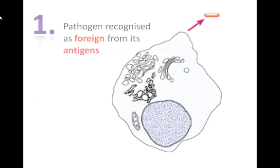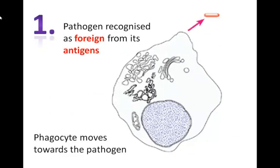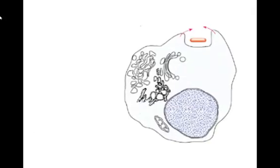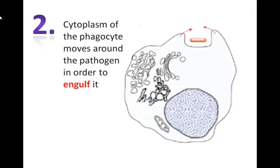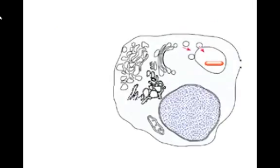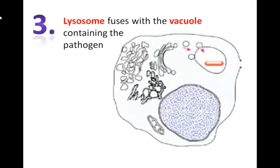But how do phagocytes actually work? Well, when a pathogen invades the body, it is recognised as foreign by the chemical markers on its outer membrane, known as antigens. The cytoplasm of the phagocyte then moves around the pathogen in order to engulf it. A lysosome then fuses with the vacuole containing the pathogen, and the digestive enzymes in the lysosome break down the pathogen.